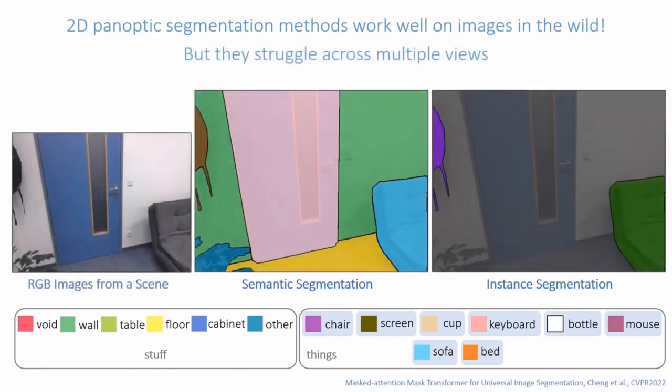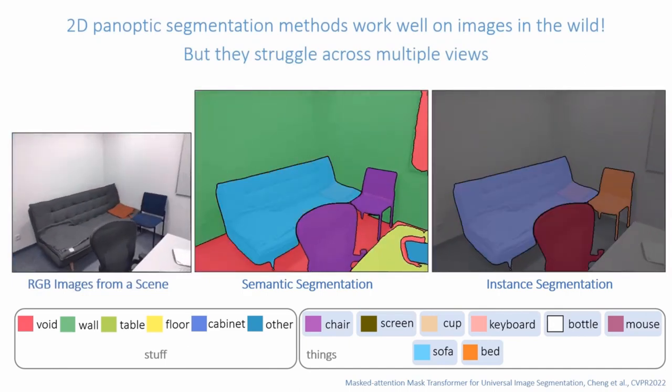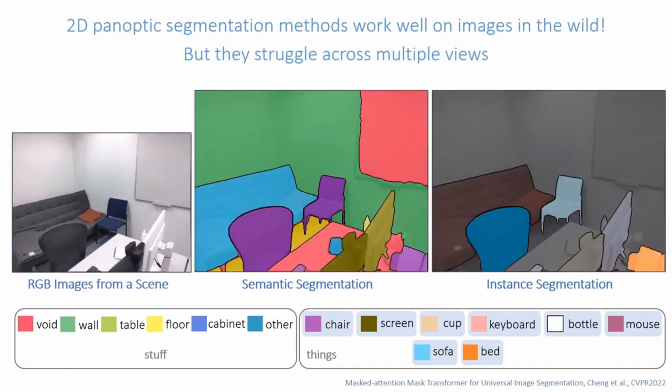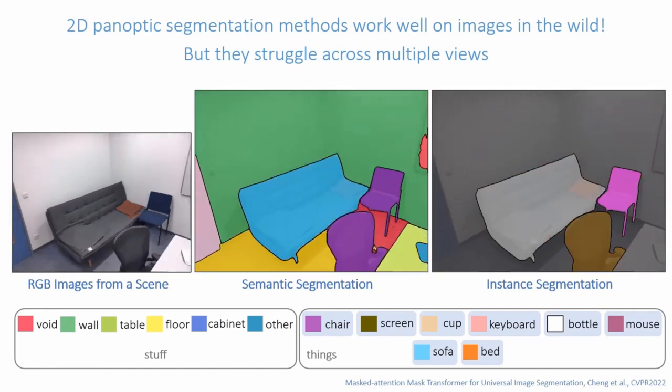However, when applied on multiple views from a scene, they can exhibit issues like inconsistencies in predictions across views. Furthermore, the instance labels are not valid across views.